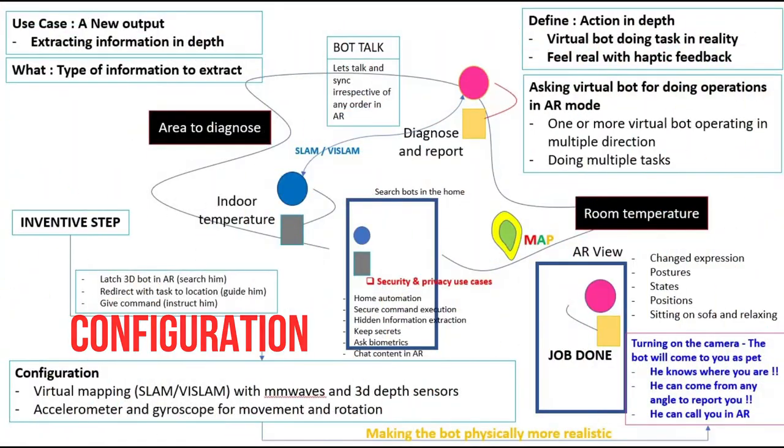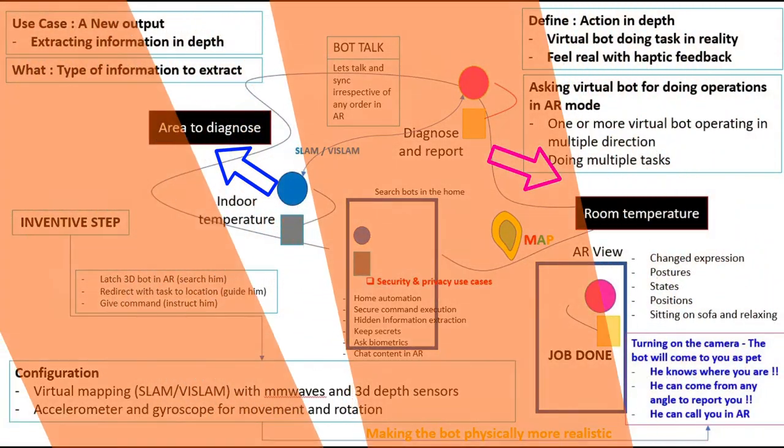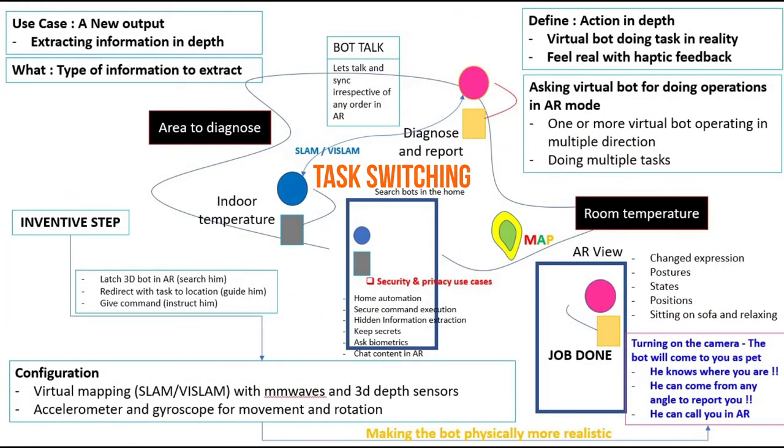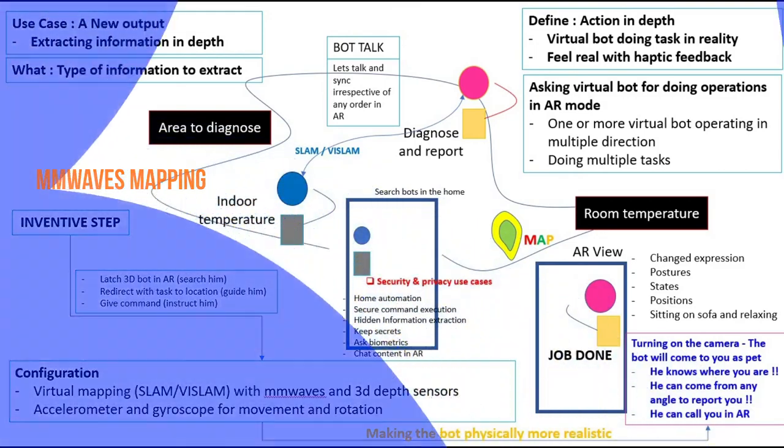Configurations such as use of TOF and mm waves to redirect bots for a task at a particular location. Switching of virtual tasks between bots. MM wave based virtual mapping re-corrections. And interaction between bots and radar type sensors can result in new configuration.